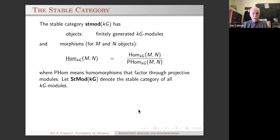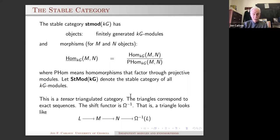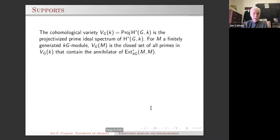The stable category has finitely generated kG modules as objects, but morphisms are changed: you factor out any morphism that factors through a projective. This is a tensor triangulated category — the triangles correspond roughly to exact sequences and the shift functor is Ω⁻¹, the cokernel of the injective hull. Triangles look like L → M → N → Ω⁻¹(L).